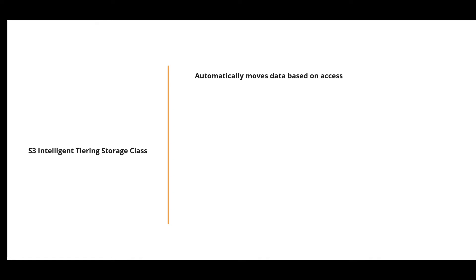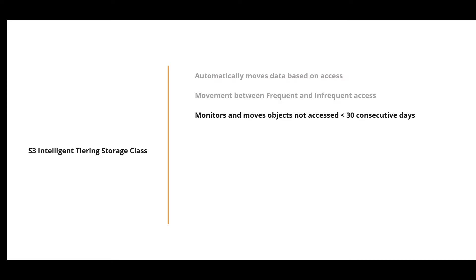Intelligent Tiering is the only storage class that automatically moves data between storage classes based on access patterns. It has two tiers — frequent and infrequent — and for a small monthly monitoring and automation fee per object, it monitors access patterns and moves objects not accessed for 30 consecutive days to the infrequent access tier. It provides the same performance as S3 Standard, with cost savings for variable access data. There are no retrieval fees, and if an object in infrequent access is later accessed, it is automatically moved back to the frequent access tier.